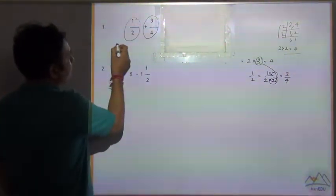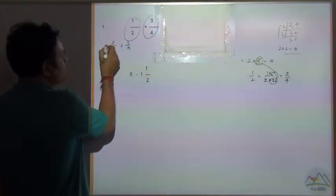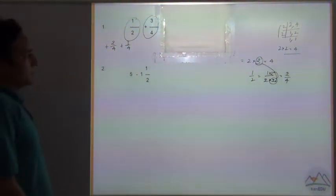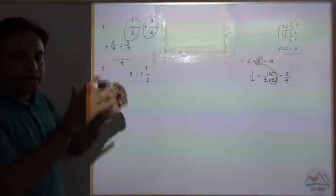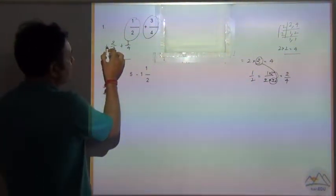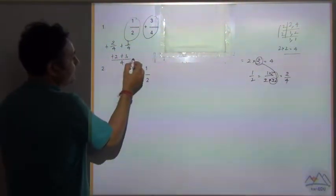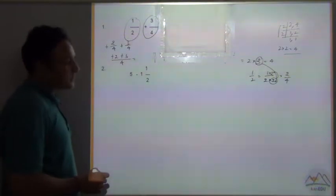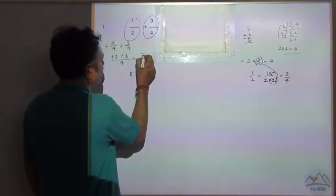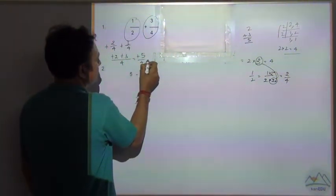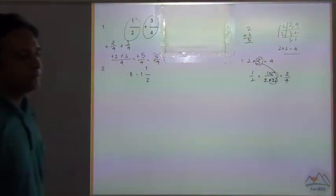So we can write 1 by 2 as 2 by 4, giving us 2 by 4 plus 3 by 4. Now take the LCM as the common denominator and add all the numerators. The signs are both plus, so 2 plus 3 equals 5. Plus 5 by 4 — and since there is a plus sign, we can remove it. The answer is 5 by 4.